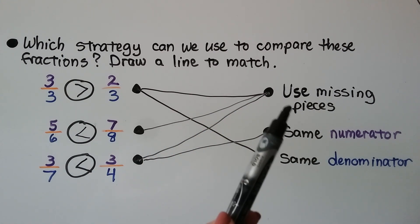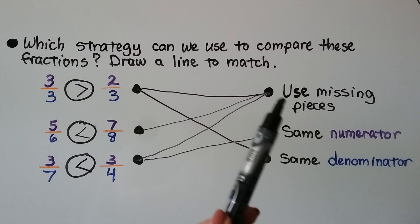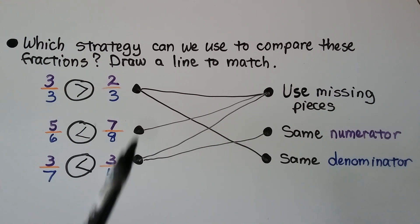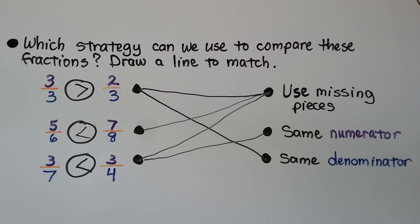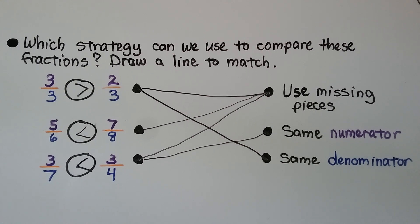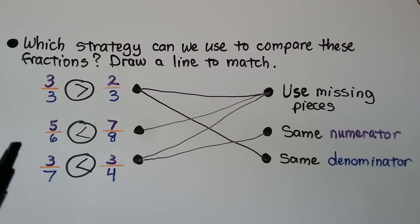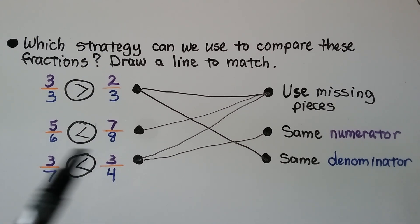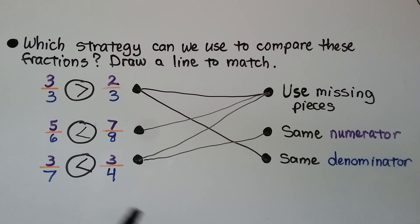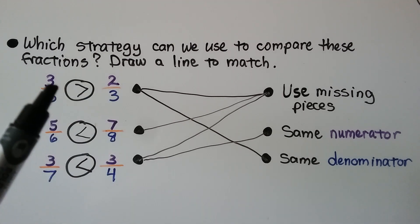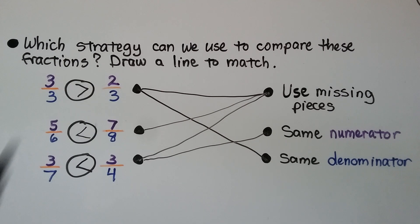So we can use the missing pieces strategy, really, to compare any type of fraction. When they have the same numerator, we can just compare their denominators, and when they have the same denominator, we can compare their numerators.